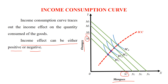Then we come to m2 quantity and n2 quantity he is purchasing. So that is reflecting the satisfaction point. The same way, when the budget line is increased, n3 and m3, and further n4 and m4 — and we connect all these satisfaction points, that will become ICC, meaning income consumption curve. As income increases, the customer increases their commodity consumption.